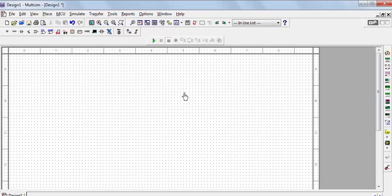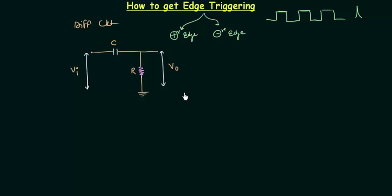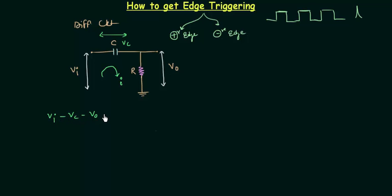This is a very interesting presentation — you are going to learn many things in one go. Let's start finding the output voltage. I will consider the current in the circuit as I and apply Kirchhoff's voltage law. The potential drop across the capacitor is VC and the voltage drop across the resistor is VO. KVL gives: VI − VC − VO = 0, or VI = VC + VO.